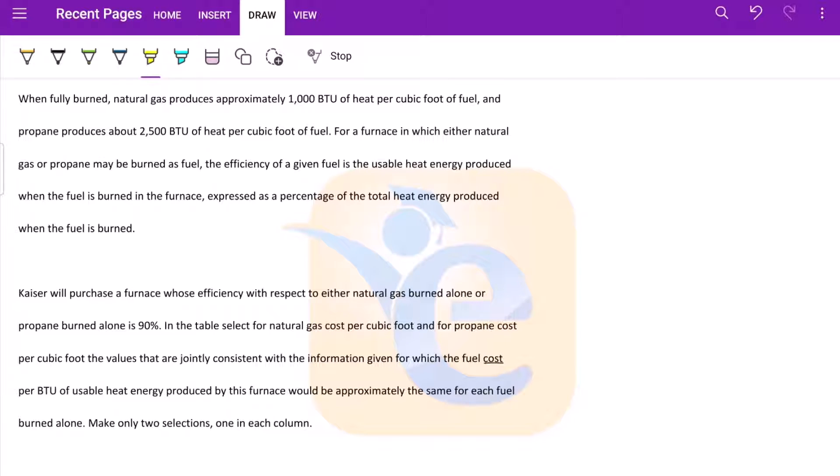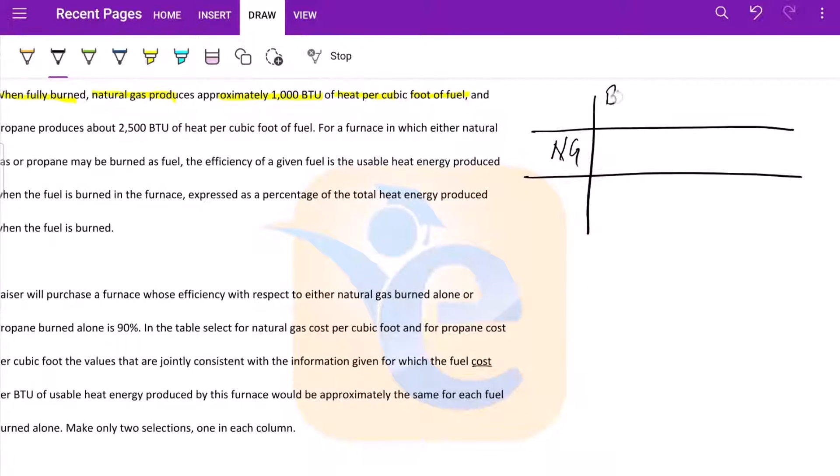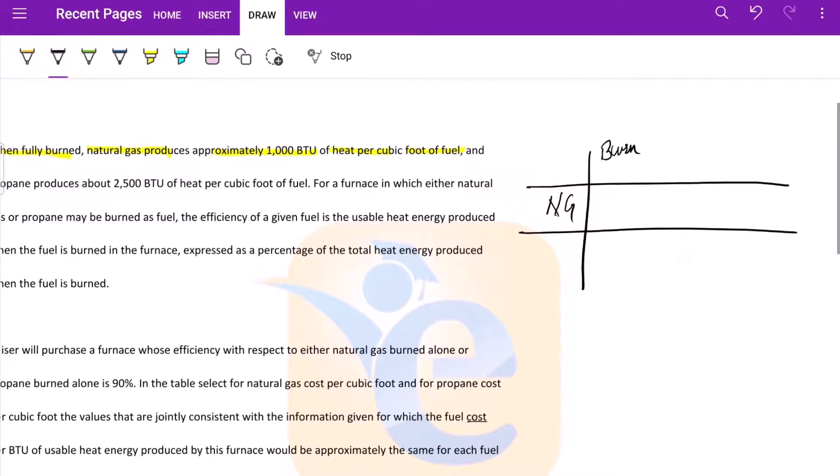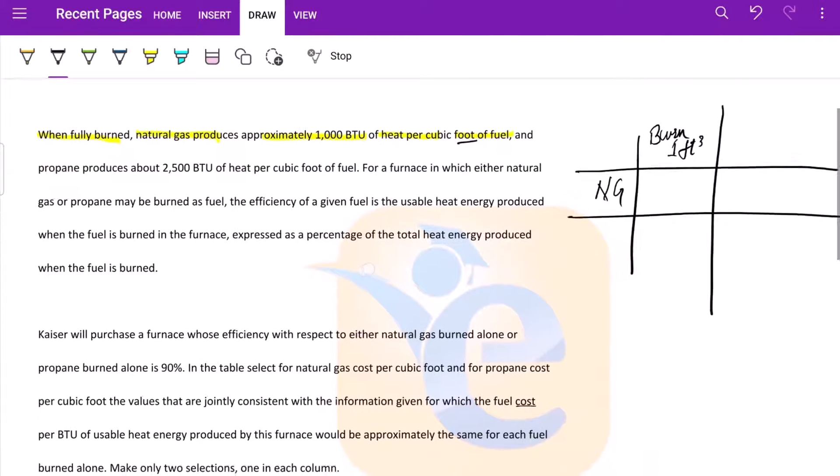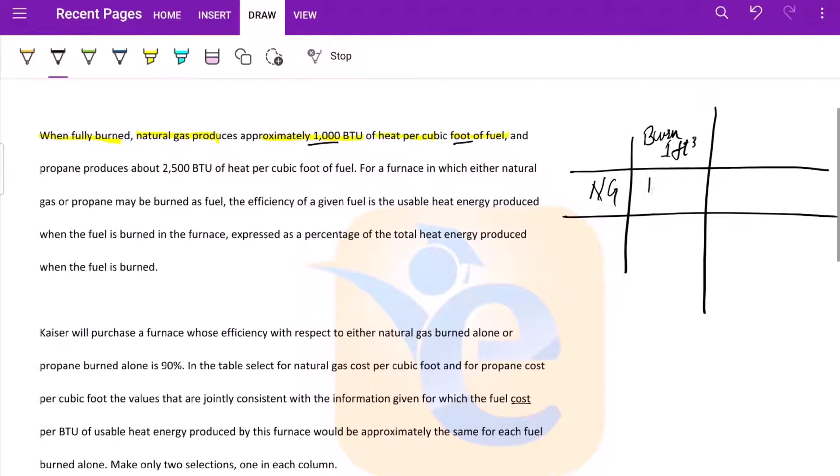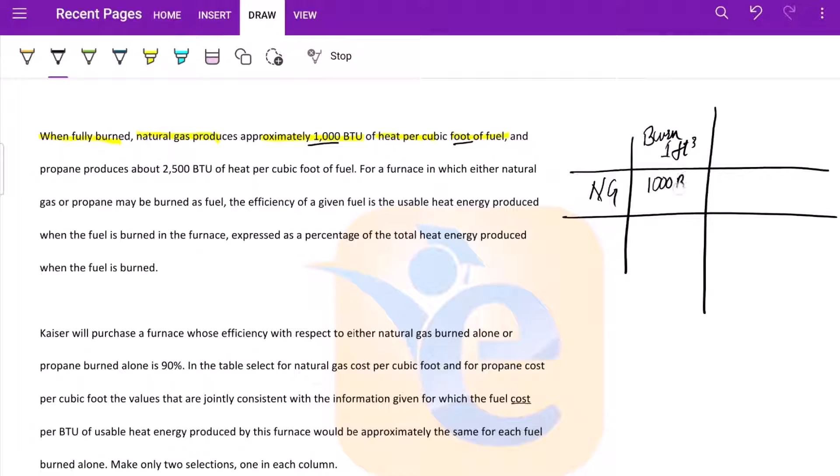So what do we have? When fully burned, natural gas produces 1000 BTU of heat per cubic foot of fuel. So we have natural gas, and when we say burn, how much do we burn? One cubic foot of fuel, we get energy of 1000 BTU.